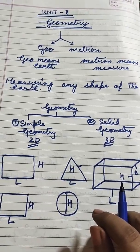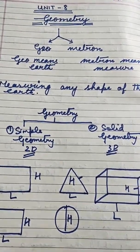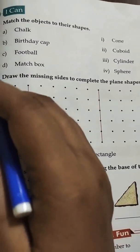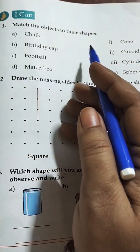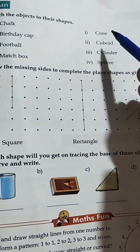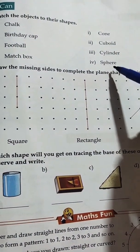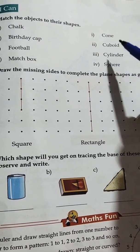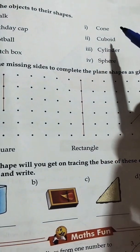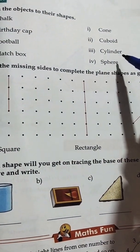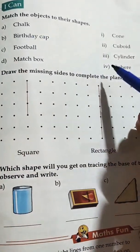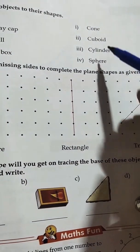So this is the concept of geometry. Now we will start our exercise. Come to the exercise — I can match the objects to their shapes. Chalk. Now you have to match chalk with some shapes that are given here. You have to match the similar shape of chalk. Here is cone, cuboid, cylinder and sphere. Before doing this, I will explain you these shapes.